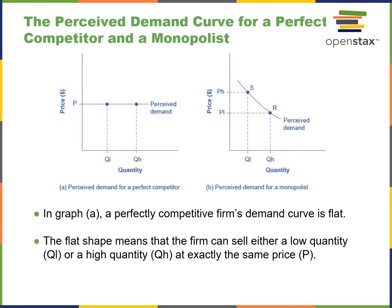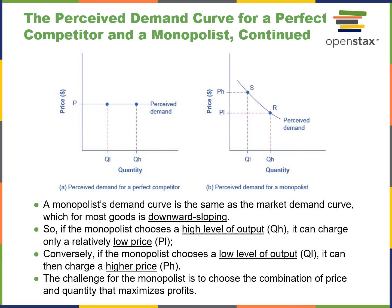The perceived demand curve for a competitor is horizontal, while the perceived demand curve for a monopolist slopes downward. The monopolist's demand curve is the same as the market demand curve for most goods, which is downward sloping. If the monopolist chooses a high level of output, it can charge only a relatively low price; conversely, if it restricts production, it will naturally gain a higher price.